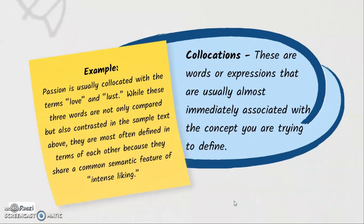When we say collocations, these are the words or expressions that are usually almost immediately associated with the concept you are trying to define — meaning these words or expressions are usually located or associated together. For example, the word 'passion' is collocated to the words 'love' and 'last.'